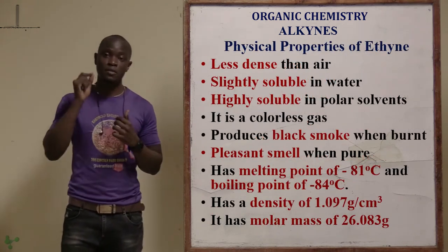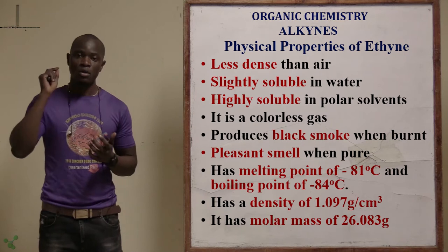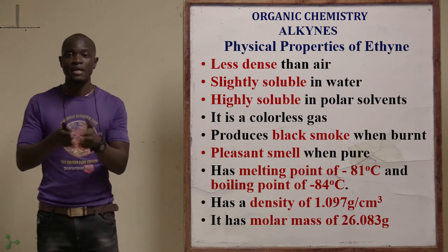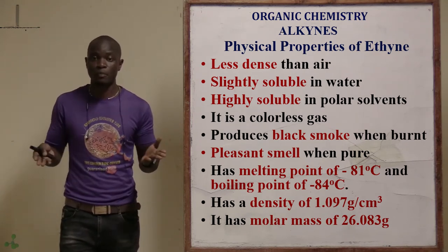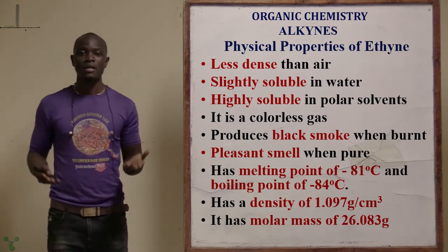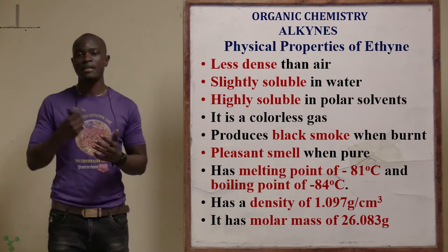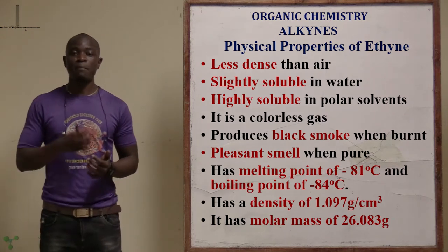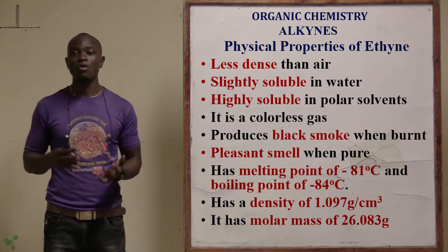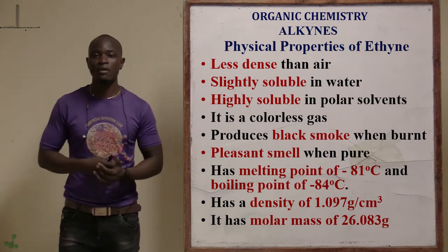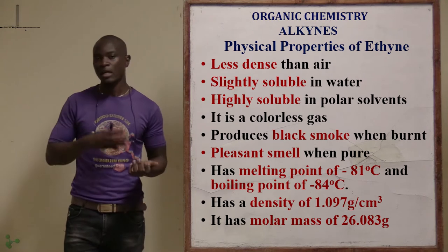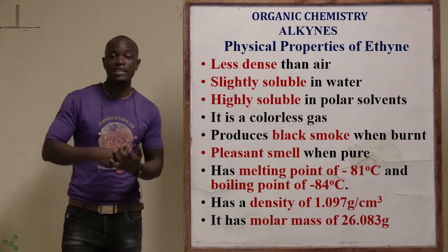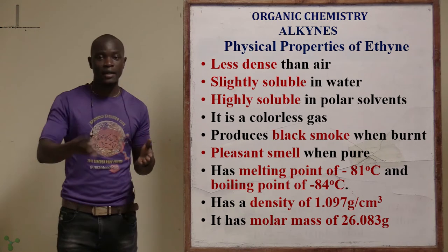Looking specifically at ethyne: ethyne is less dense than air, slightly soluble in water, and highly soluble in organic solvents. It is colorless and has a pleasant smell when pure. It has a very low melting point and boiling point, a molecular mass of about 26 grams per mole, and a density of 1.09 grams per litre.